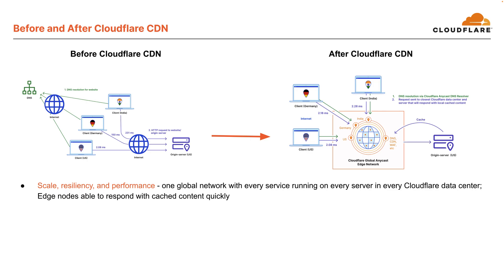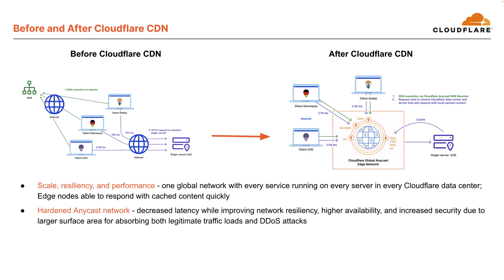One global network with every server running in every Cloudflare data center. Edge nodes are able to respond with cached content quickly. Hardened Anycast network provides decreased latency while improving network resiliency, higher availability, and increased security due to a larger service area for observing both legitimate traffic loads and DDoS attacks. Enhanced CDN solution with Argo Smart Routing and Tiered Cache, both of which I'll discuss in more detail later on in this walkthrough.